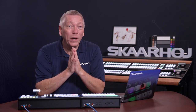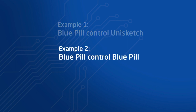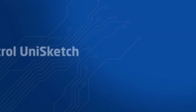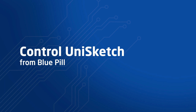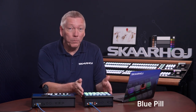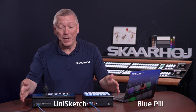I'll show you two examples where I use our combined configurations. First, make a Bluepill panel control a Unisketch panel. And next, make a Bluepill panel control another Bluepill panel. Let's get started. In this example, we'll use a Frameshot Pro with Bluepill inside to control a PTC Pro Unisketch panel.